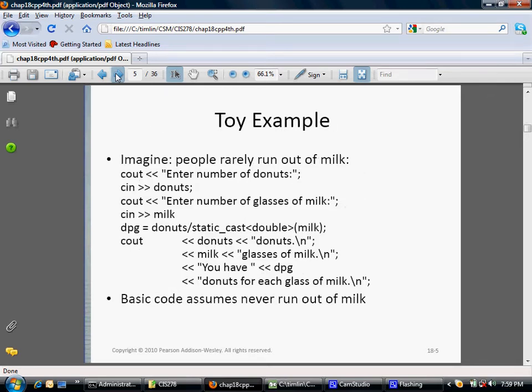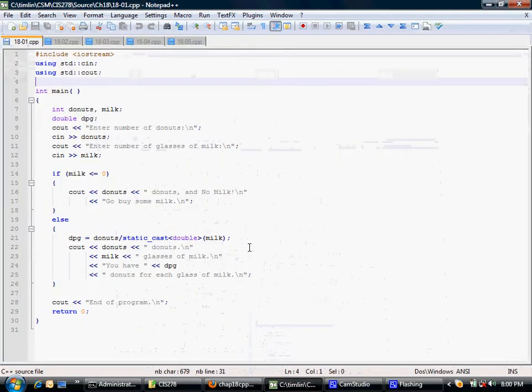Let's talk about the first example, this toy example. Someone entering a number of donuts and then entering the number of glasses and then saying that the DPG, which I guess is donuts per gallon, is equal to the donuts divided by the milk, and then outputting all that. The basic assumption here is that the user never enters zero for milk. The problem is that if they enter zero, we get an exception, potentially a pretty nasty one.